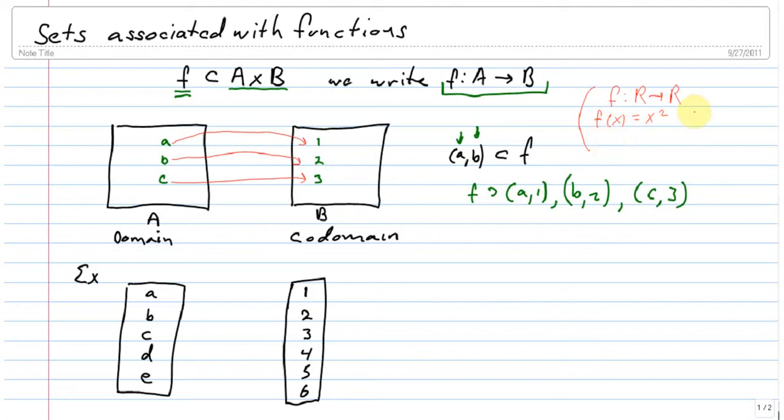So this, for example, f contains the ordered pair (2, 4), right? 2 is associated to 4 by this function.